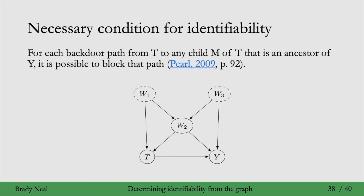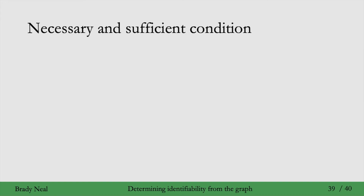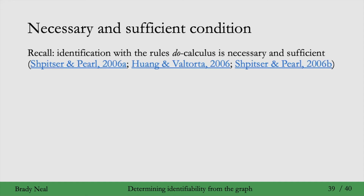So we've seen a condition that is sufficient but not necessary, and a condition that is necessary but not sufficient. What about a graphical condition that is both necessary and sufficient? Recall that being able to convert a causal estimate into a statistical estimate using the rules of do-calculus is a necessary and sufficient condition for identifiability, but this isn't graphical, so it's not as appealing.